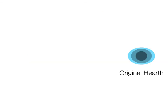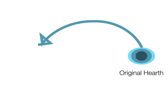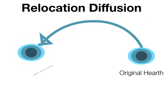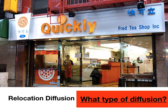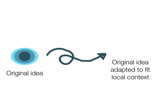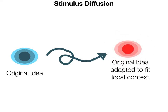The next type is relocation diffusion. People who have adopted an idea relocate to a new place — often a new country far away — taking an aspect of their culture with them, and it then diffuses from the new relocated hearth. A good example is boba tea — specifically the Quickly brand — which diffused from Taiwan to the United States. The next type is stimulus diffusion: an original idea is relocated and adapted to fit the local context. So you have your original idea and it's changed to suit the new place.